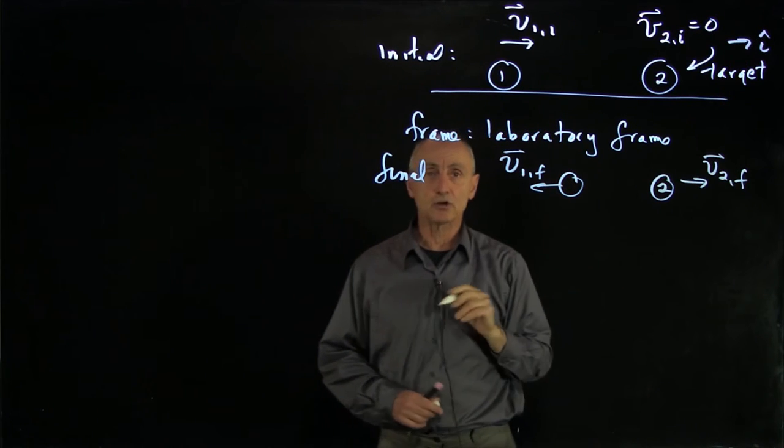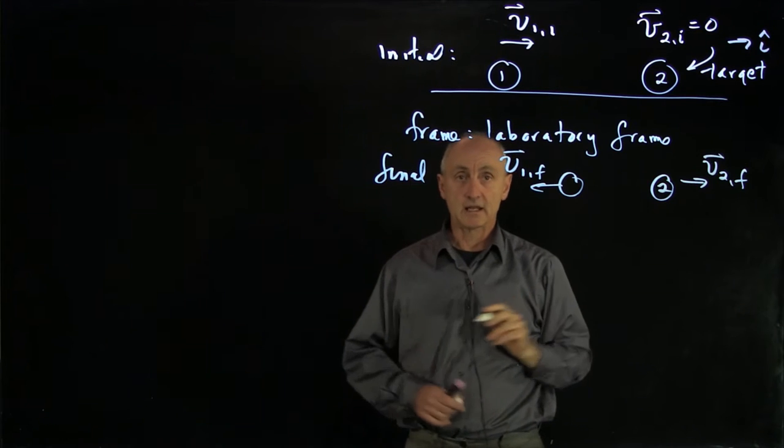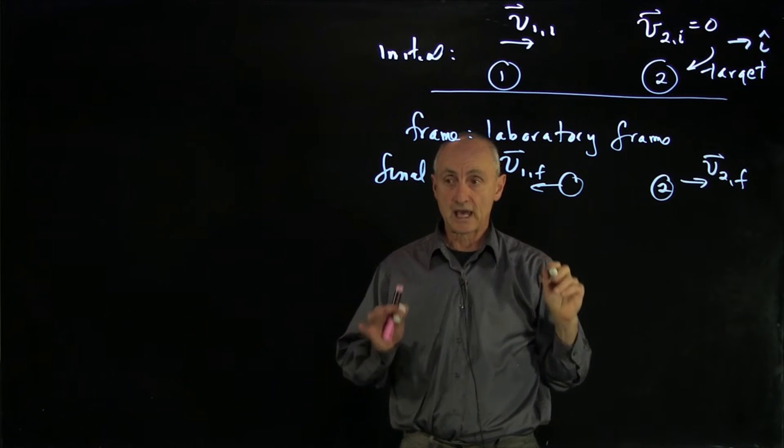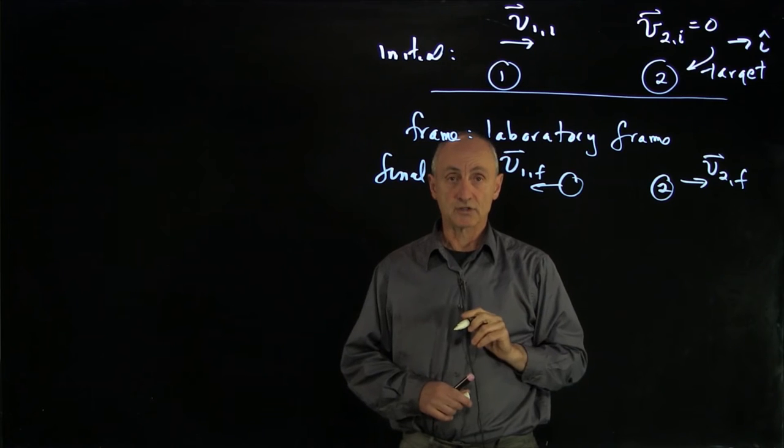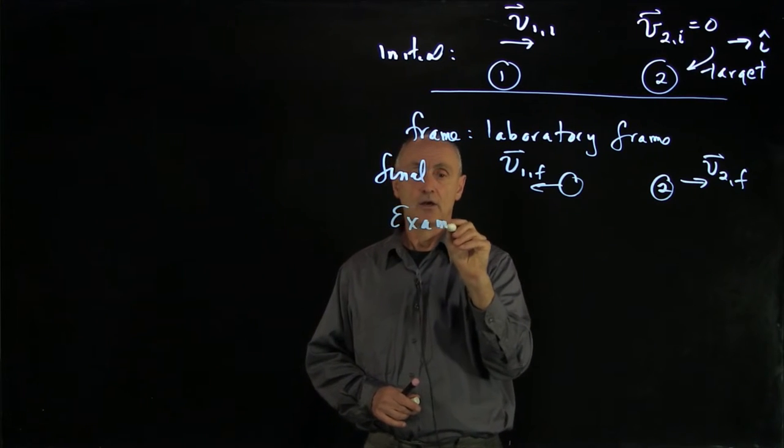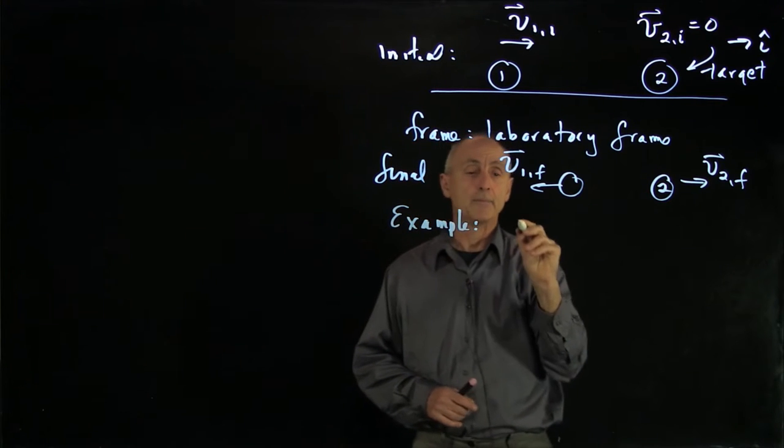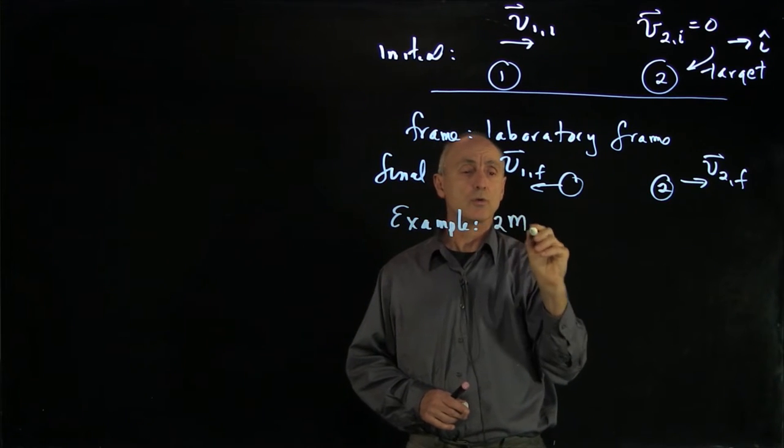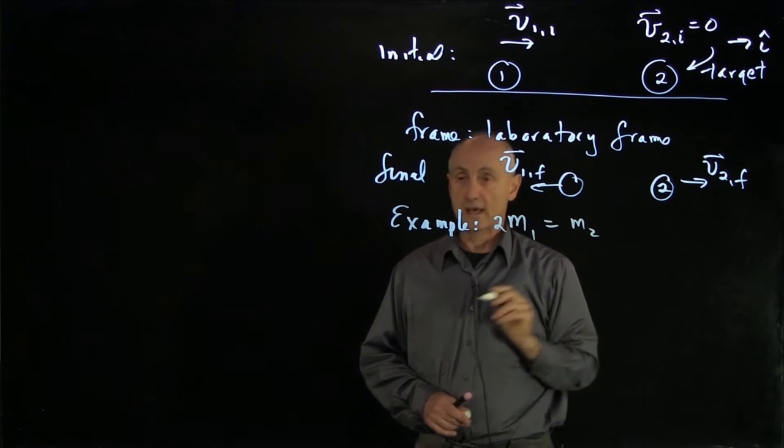Let's now look at some examples where we're analyzing this type of collision, in which both energy and momentum are constant. For a particular example, we'll have m2 is twice m1.